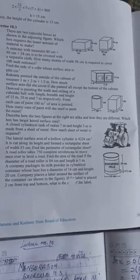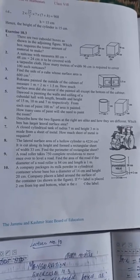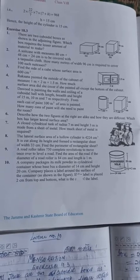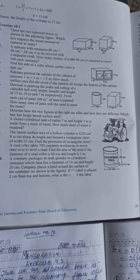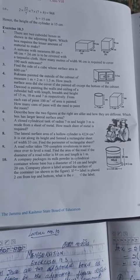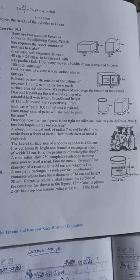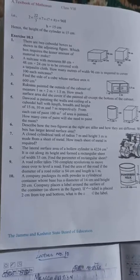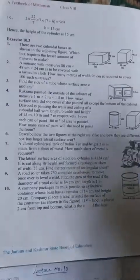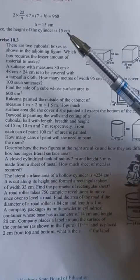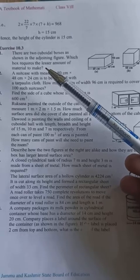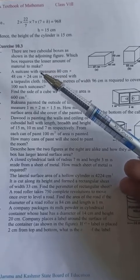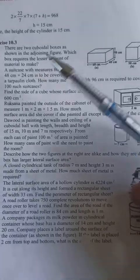Assalamu alaikum. We will study Exercise 10.3 from the 8th grade math chapter on mensuration. Let's look at question number 1. There are two cuboidal boxes as shown in the adjoining figure. Which box requires the less amount of material to make?